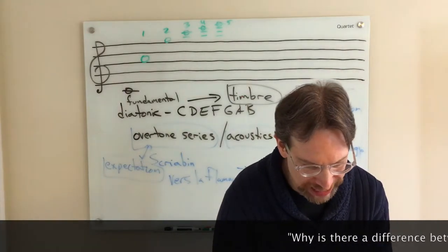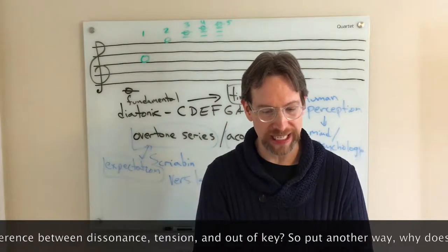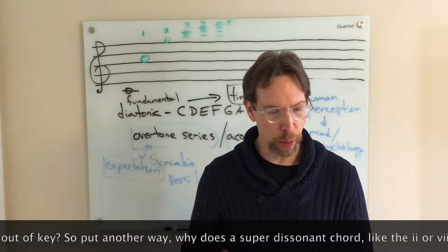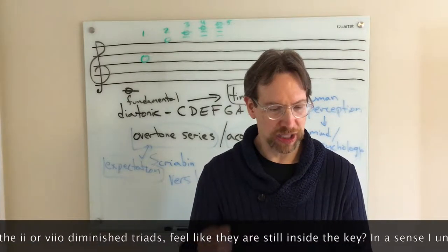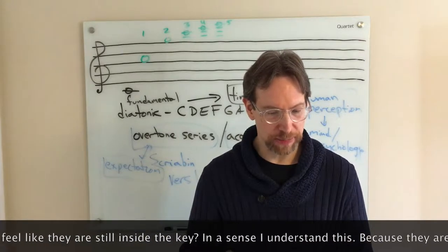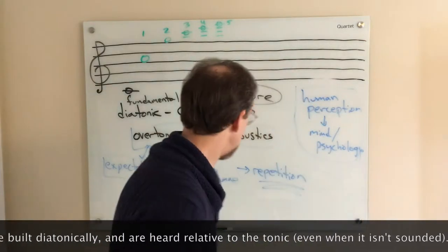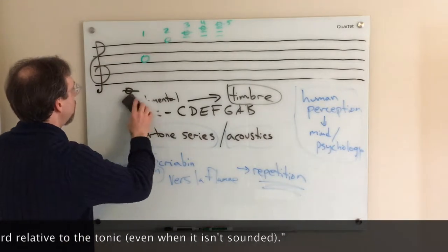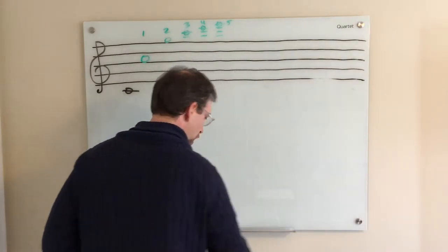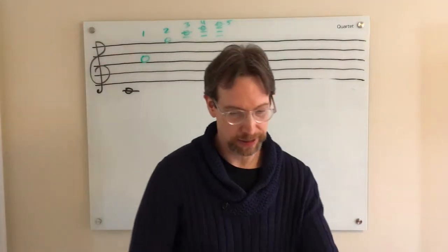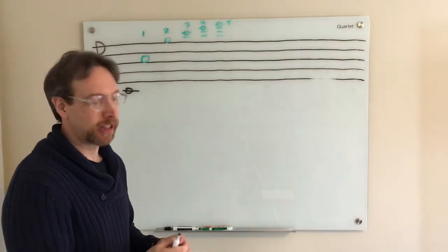Another question from Michael: why is there a difference between dissonance, tension, and out of key? Why does a super dissonant chord like the two or the seven diminished triad still feel like it's inside the key? I want to take issue with calling the two chord and seven chord 'super dissonant.' There are levels of dissonance — mild dissonance and super dissonance. The two chord and the seven chord don't fall into the category of super dissonant; we need to reserve that for other chromatic harmonies.